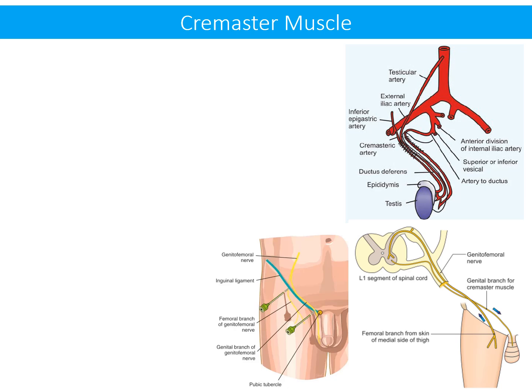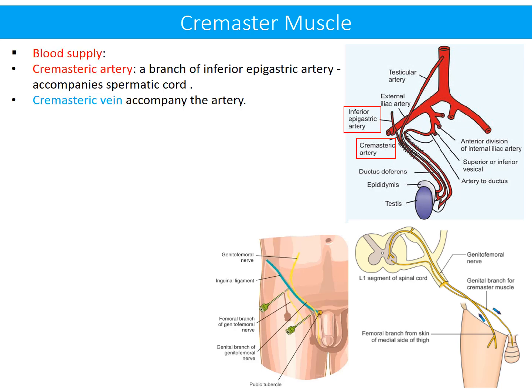The cremasteric muscle receives blood supply through the cremasteric artery, which is a branch of the inferior epigastric artery. This artery accompanies the spermatic cord to supply the cremasteric muscle. The cremasteric vein accompanies the artery.